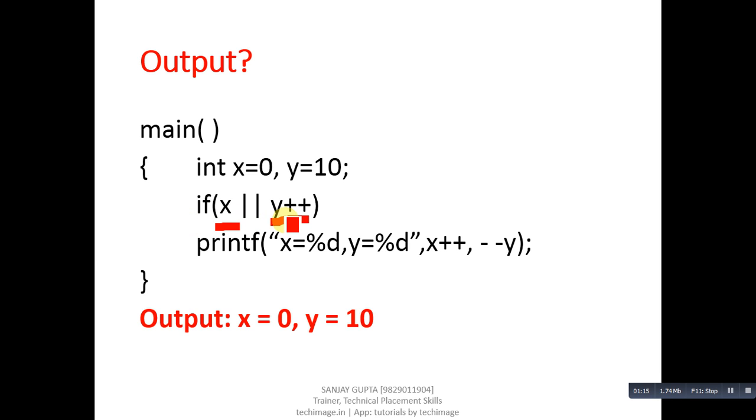So overall this if condition will be considered as true, means this printf which is connected with if will be executed. But Y plus plus will convert value of Y from 10 to 11, then this printf will be executed. So it has X plus plus and minus minus Y. This X plus plus is post increment, that's why X whose value is zero will be printed first. After printing the value of X as zero, it will become one, but it will print output as zero.